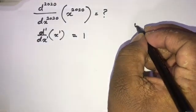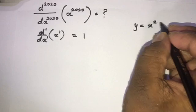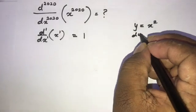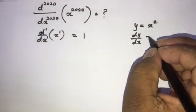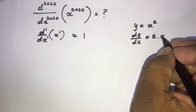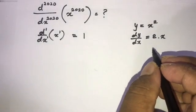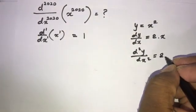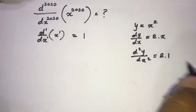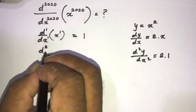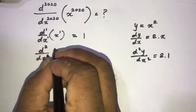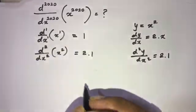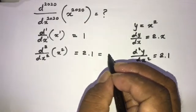If we get y equal to x squared, we want to find the derivative of x squared with respect to x. So we can write dy/dx is equal to 2 times x. Differentiating again with respect to x gives 2 times 1, so the second derivative of x squared equals 2 times 1, which we can write as factorial 2.